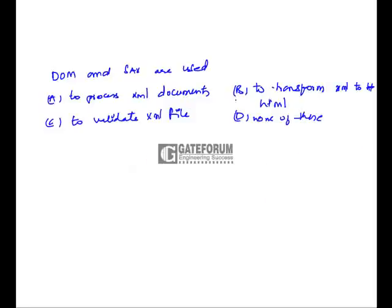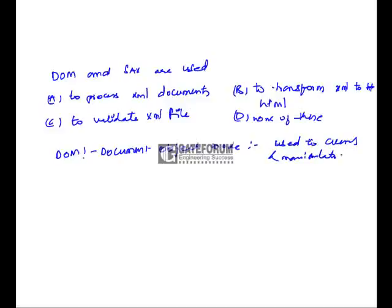DOM and SAX are used to — Option A: process XML documents, Option B: transform XML to HTML, Option C: validate XML files, Option D: none of these. DOM stands for Document Object Model and it is an API for XML and HTML documents, used to access and manipulate XML and HTML. SAX stands for Simple API for XML (Simple Application Programming Interface for XML). It is an alternative to DOM and is used for the same purpose. So DOM and SAX are used to process XML documents — the correct option is A.